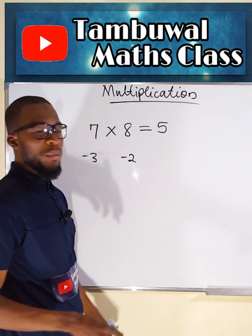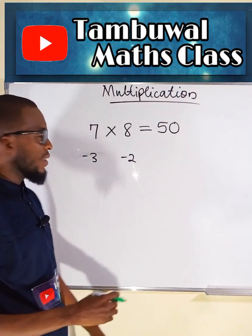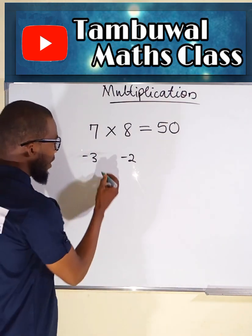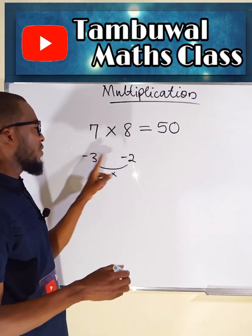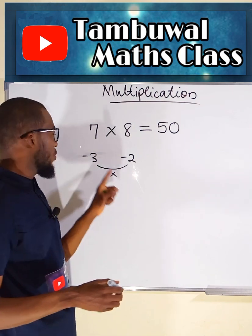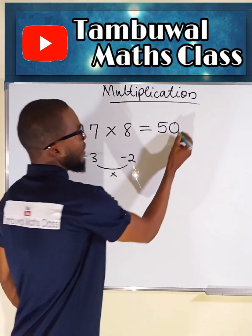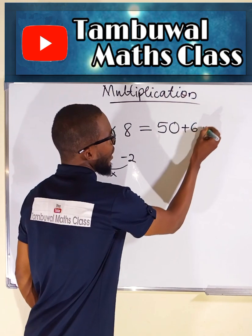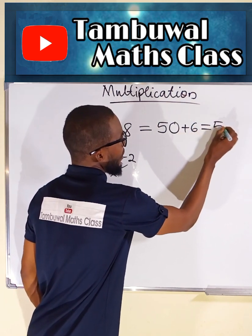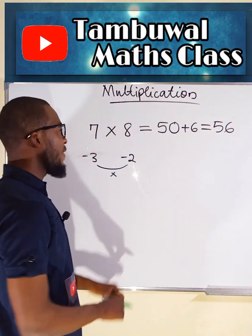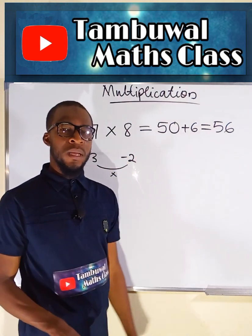But since we are in base 10, we add 0 here to make it 50. Next, multiply these two numbers together. Minus times minus is plus, and 3 times 2 is 6. Then you add 6 here, making 56. And therefore, 7 times 8 is equal to 56.